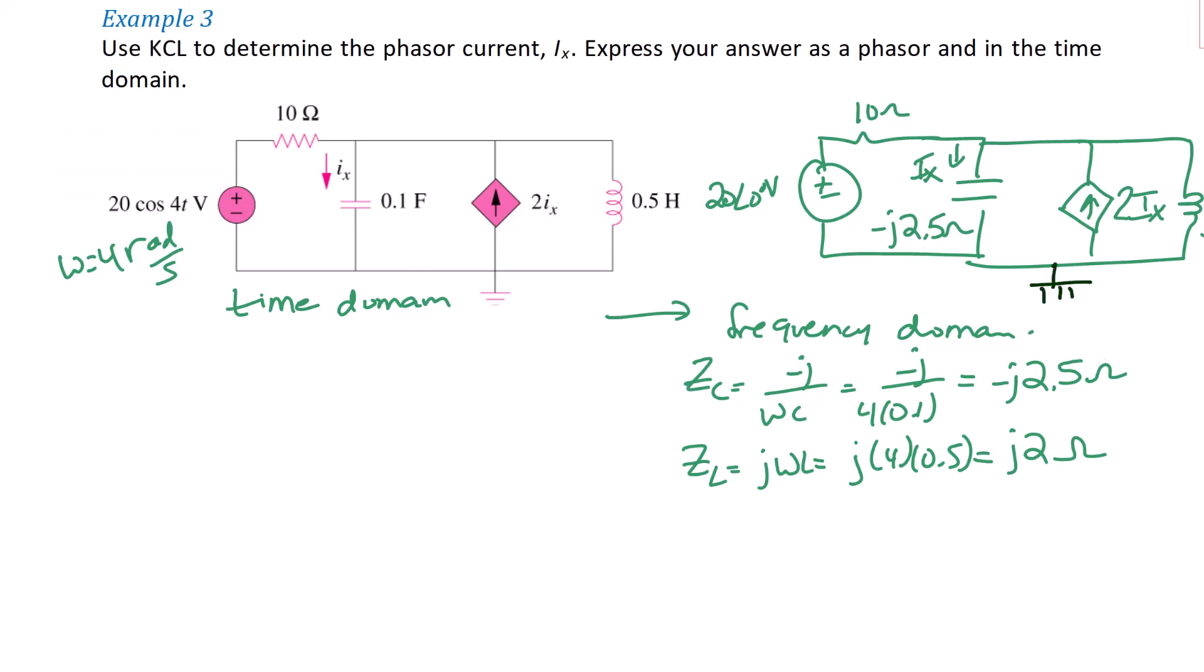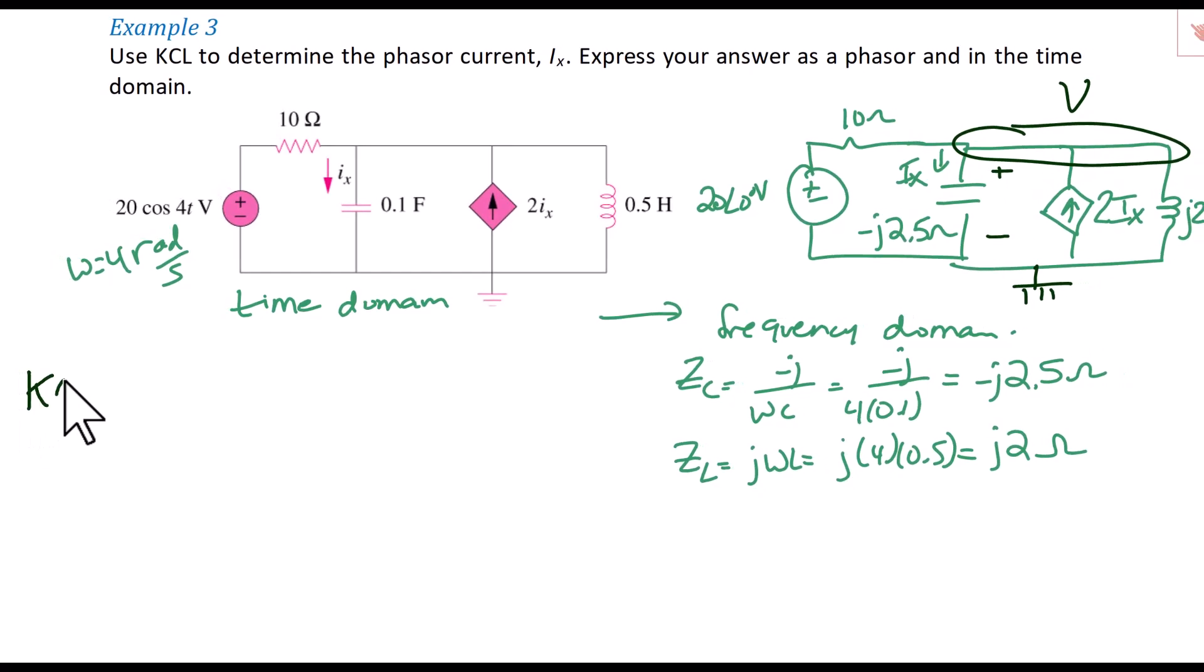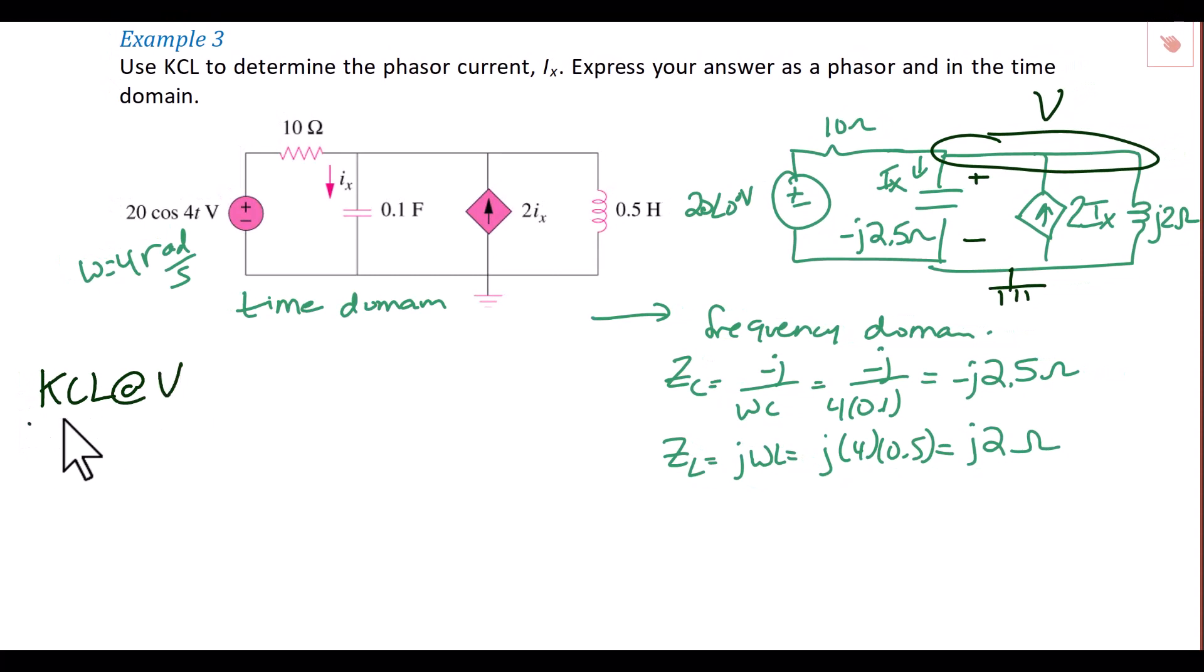Then we're going to label our bottom node ground, our top node V, and then we are going to write the KCL equation at node V. So we're going to have V minus 20 over 10 plus V over negative J 2.5 plus V over J 2 equals 2IX.